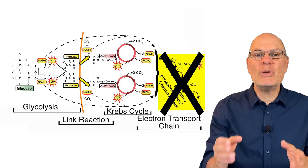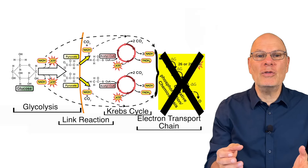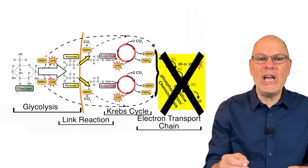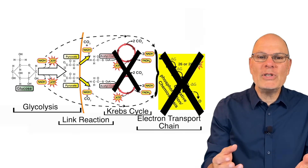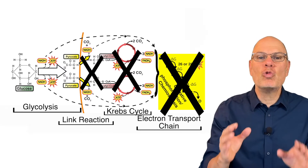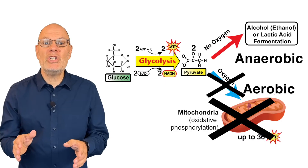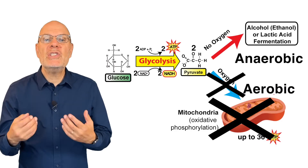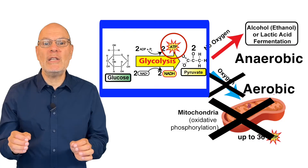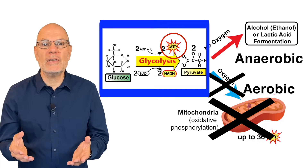If oxygen isn't present, then electrons don't flow, and the electron transport chain, the Krebs cycle, and the link reaction grind to a halt. Even with aerobic respiration shut down, cells can still create a small amount of ATP through glycolysis.